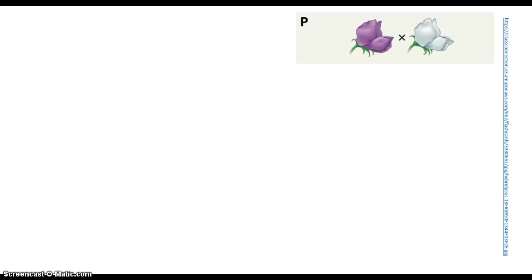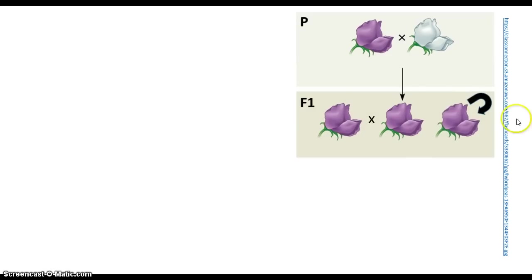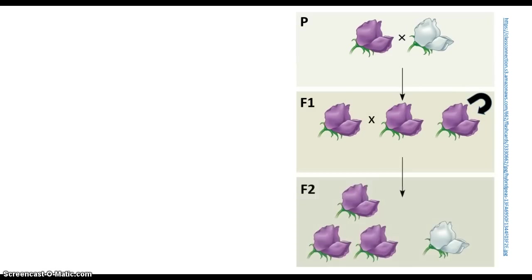If we look at flower color specifically, we can see that all of the F1, the first generation of flowers, are purple. When you mate them with others, or you self-fertilize them, what you get is this very characteristic ratio, 3 to 1, of dominant to recessive traits.